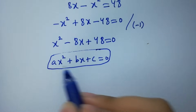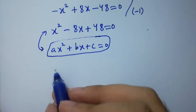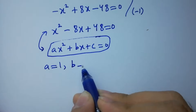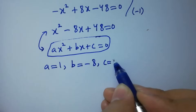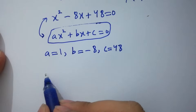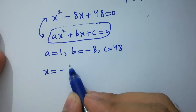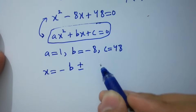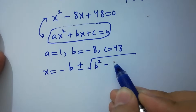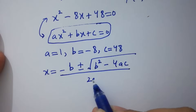By comparing, we have a equal to 1, b equal to minus 8, and c equal to 48. Apply the quadratic formula: x equal to minus b plus or minus square root of b squared minus 4ac, all over 2a.